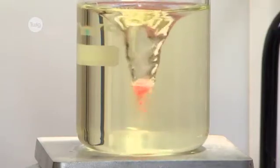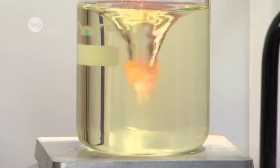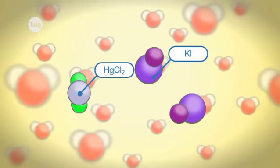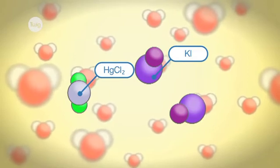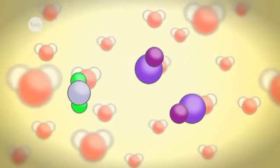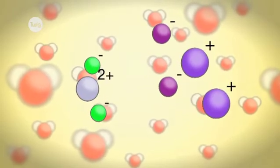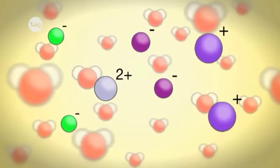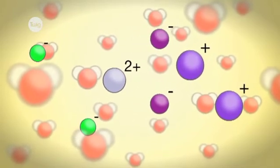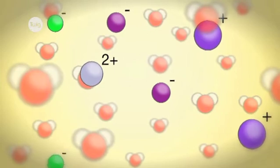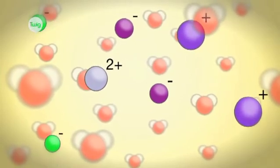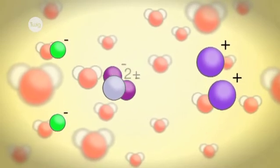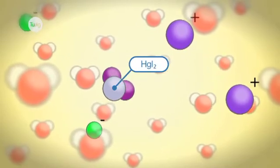Let's look more closely at what happens. When salts like potassium iodide and mercury chloride are dissolved in water they dissociate into ions which carry a positive or negative charge. Oppositely charged ions attract each other, so the mercury and iodide ions bond to form mercury iodide, which is an orange solid.